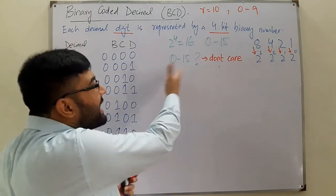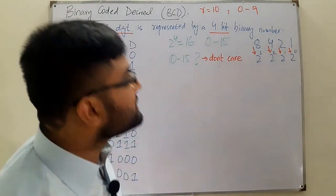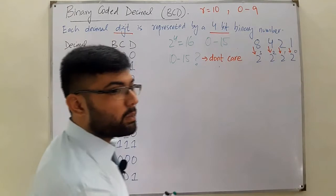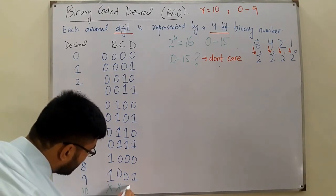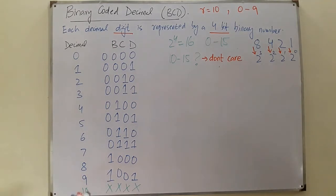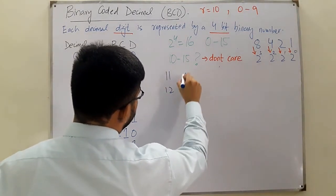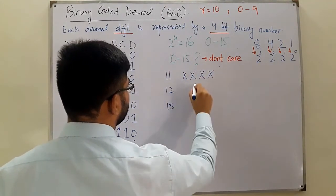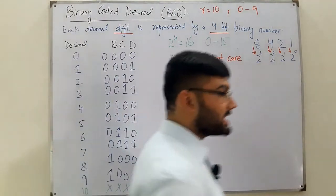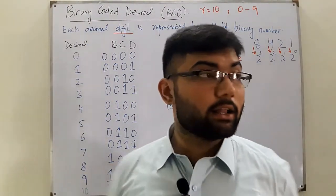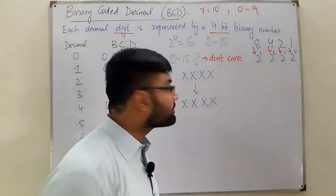We can technically convert 10 to 15 into a BCD equivalent, but the basics of BCD are only from 0 to 9 in four bits. We'll see the don't cares in Karnaugh maps in great detail in upcoming lectures. For now, just understand: we represent don't cares by a cross (×). If it's a 1 or a 0, it doesn't matter to us. So for 10, 11, 12 all the way to 15, we place crosses — meaning don't care.